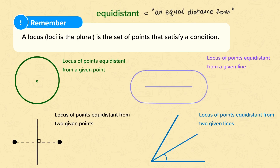Bearing that in mind, if we were asked for the locus of points equidistant from a given point, we would be looking for all of the points that are a fixed distance away from this. So for example, if I wanted all of the points that were one centimetre from this given point, I could have this point over here.